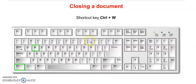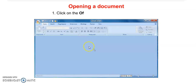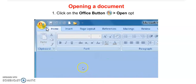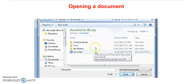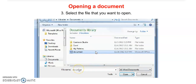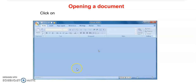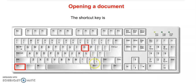Next is opening a document. After saving your file, if the next day you want to view it, click on the Office button and then the Open option. An Open dialog box will appear. Select your file or type your file name and click the Open button to open your saved file. You can also click the Open button from the Quick Access toolbar. The shortcut key for Open is Ctrl+O.